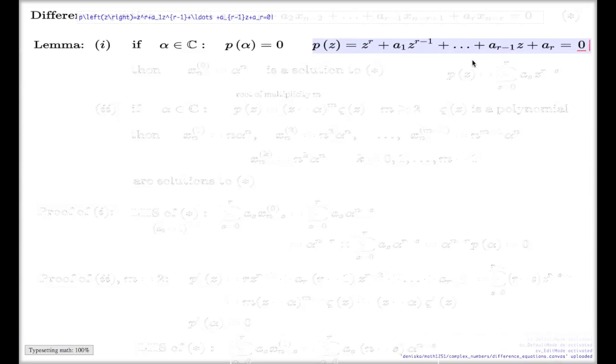Look at this. The first part says, if I have a complex number alpha such that it is a solution to the polynomial p, where p, look at the polynomial p. This is a polynomial which is combined out of these coefficients, a1, a2, ar-1, ar. So it's a polynomial of degree r, the highest term is 1. So if I build a polynomial of these coefficients, and if I take a root to such a polynomial, then the sequence of numbers built like so, just the powers of this root, it will be a solution to my difference equation asterisk.